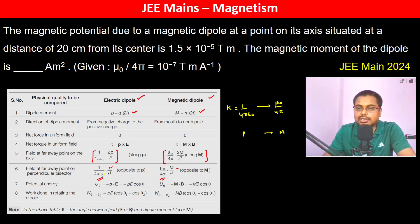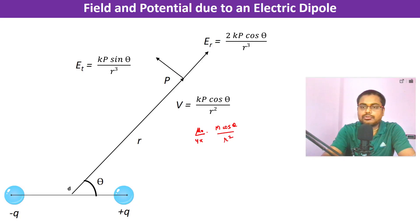Since it is on its axis, θ is 0 degrees. On the other side, θ is 180 degrees. So cos θ becomes minus 1, but the magnitude doesn't change.